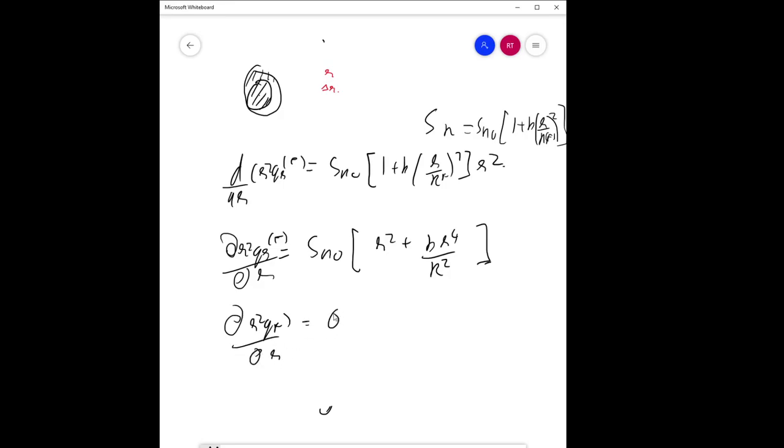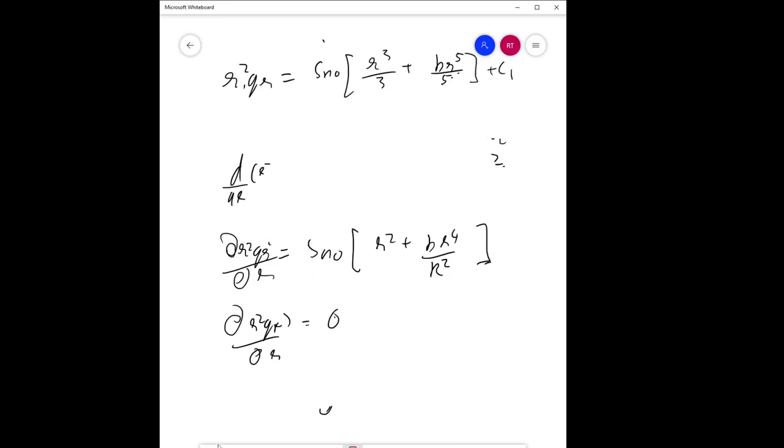You can integrate both. The first gives R^2 Q_R = S_n0(R^3/3 + BR^5/5) + C_1. The second gives R^2 Q_R for the cladding. This is inside the fissile material and this is the cladding part.